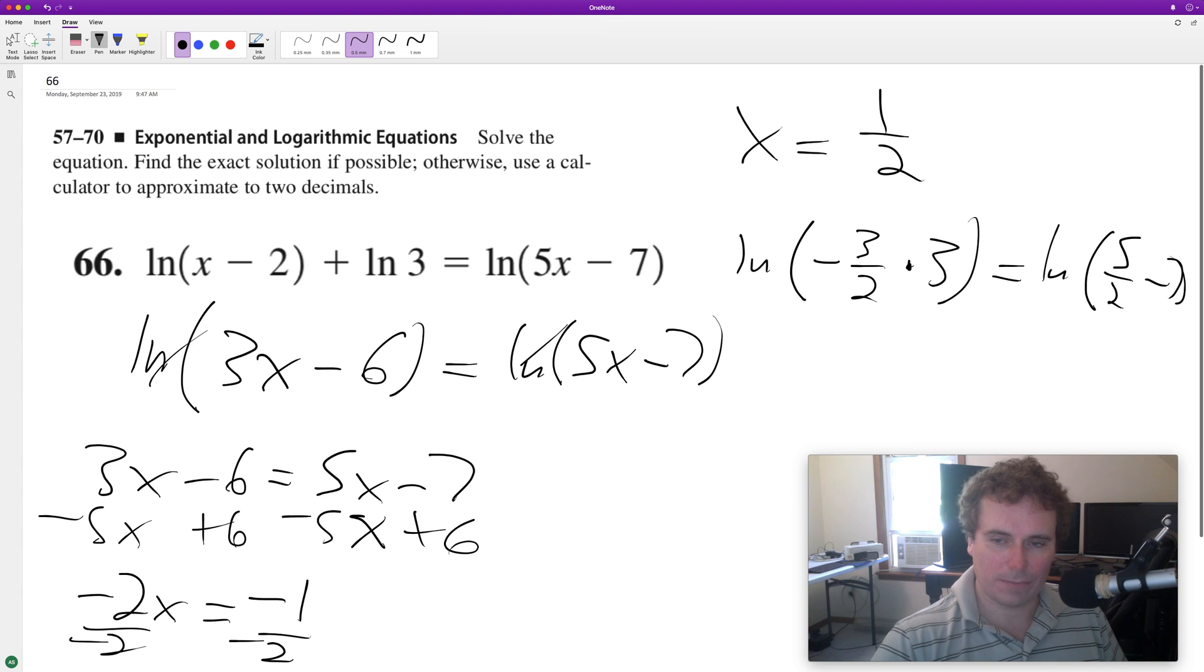So we end up with natural log of negative nine over two, and when we subtract seven—seven is the same thing as fourteen over two—that ends up being natural log of negative nine over two, but excuse me, one half.